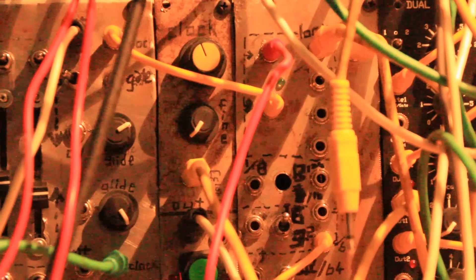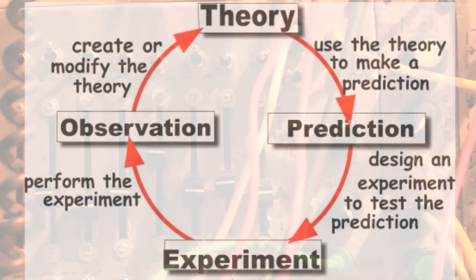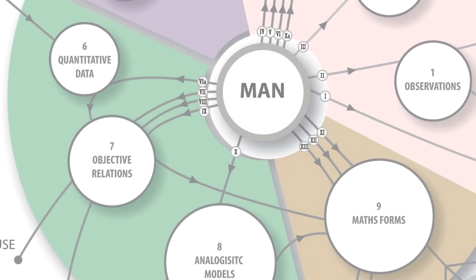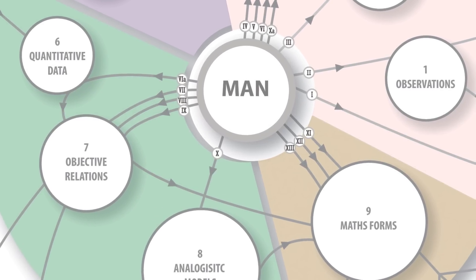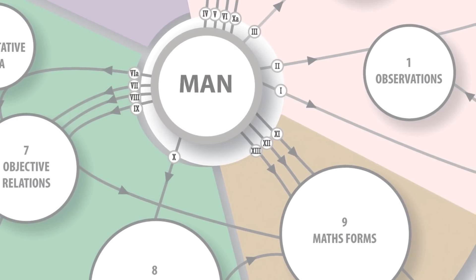This is where you can start to formulate theories based on the data you've gathered and modelled — I would call that production 'analogistic models' or theories. You'll notice the arrow coming from man and going through objective relations, bypassing the analogistic models, going straight to maths forms. This is important because it does not return to reality. It's using as its basis the objective relations and turning them into formulae, equations. Because it doesn't go back to reality, that's why we call this section 'ideality'.